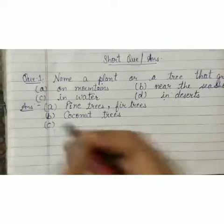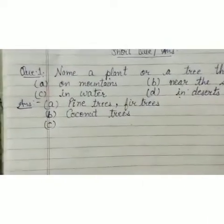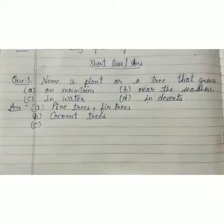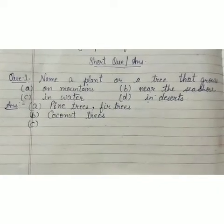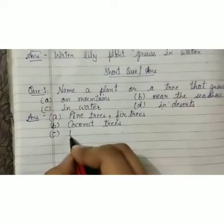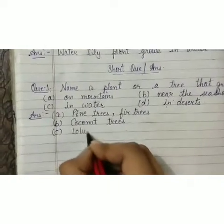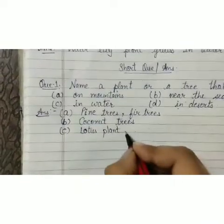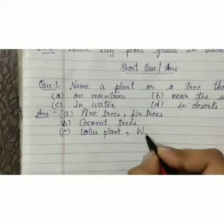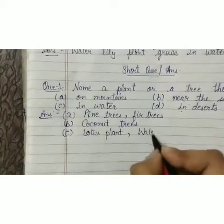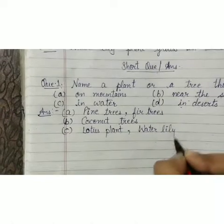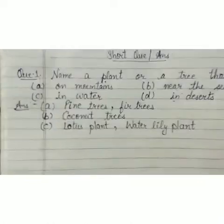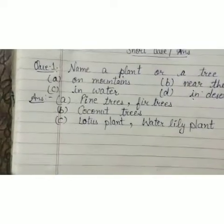And then answer of C: in water. Name a plant or tree that grows in water. Plants like lotus plant — L-O-T-U-S — lotus plant or water lily plant. Lotus plant or water lily plant. Clear?